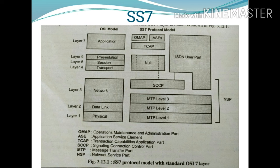Next is the Transaction Capabilities Application Part (TCAP). TCAP in SS7 refers to the application layer which invokes the services of the SCCP and the Message Transfer Part in a hierarchical format. This layer checks that networking points, signaling points, and all other networks are connected with each other.